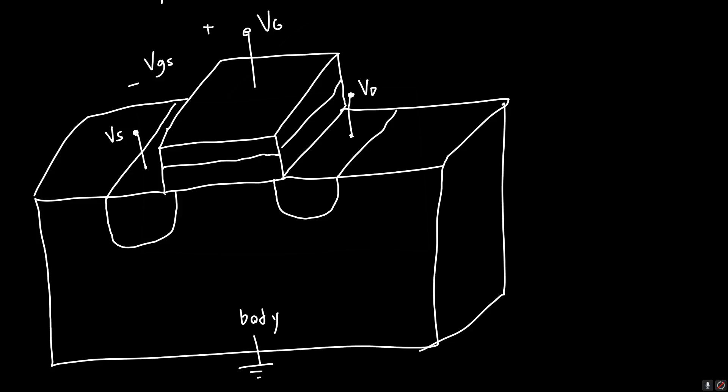So that's a problem, right? Because everything we did assumed that we were applying a voltage relative to the body. If the source is grounded then we've got no problem because there's no difference in potential between the source and the body. But if Vs is not grounded, say Vs is 1 volt or something, then we've got a problem.